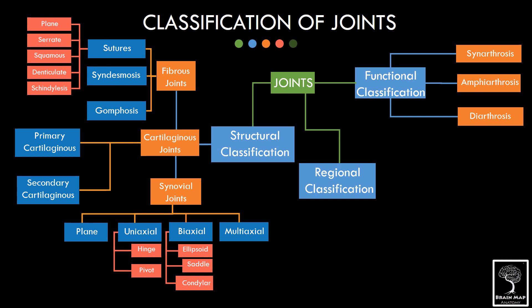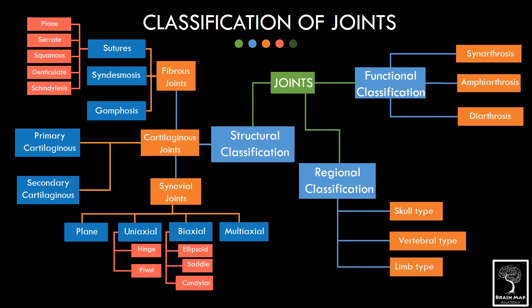Under regional classification, joints can be skull variety, vertebral type, or limb type. You can see there is overlapping between the classifications and the skull variety is mostly fibrous sutural, vertebral type is mostly secondary cartilaginous, and in the limbs joints are mostly synovial.